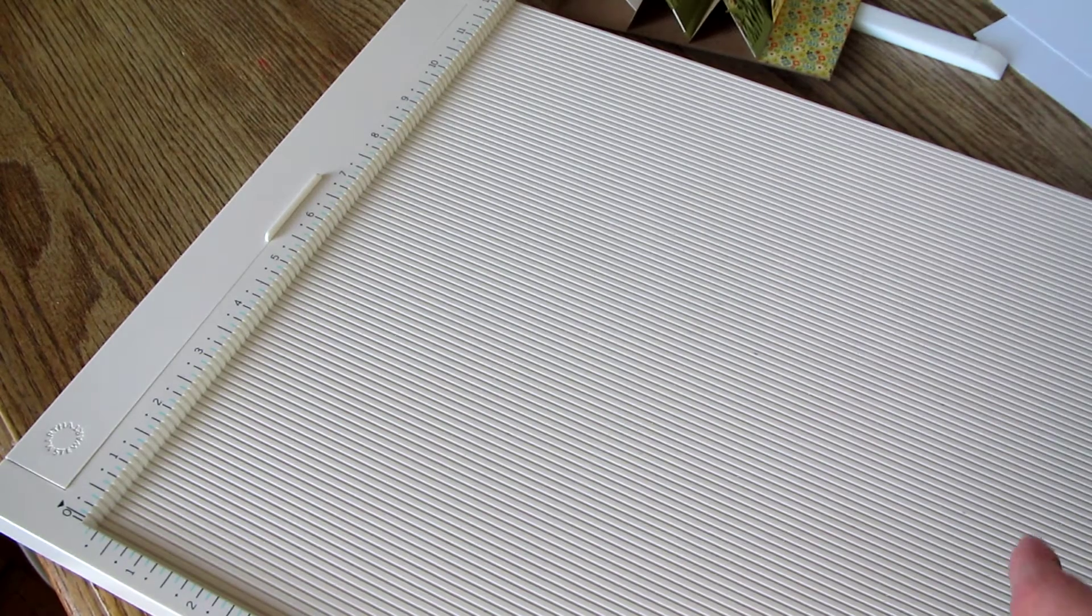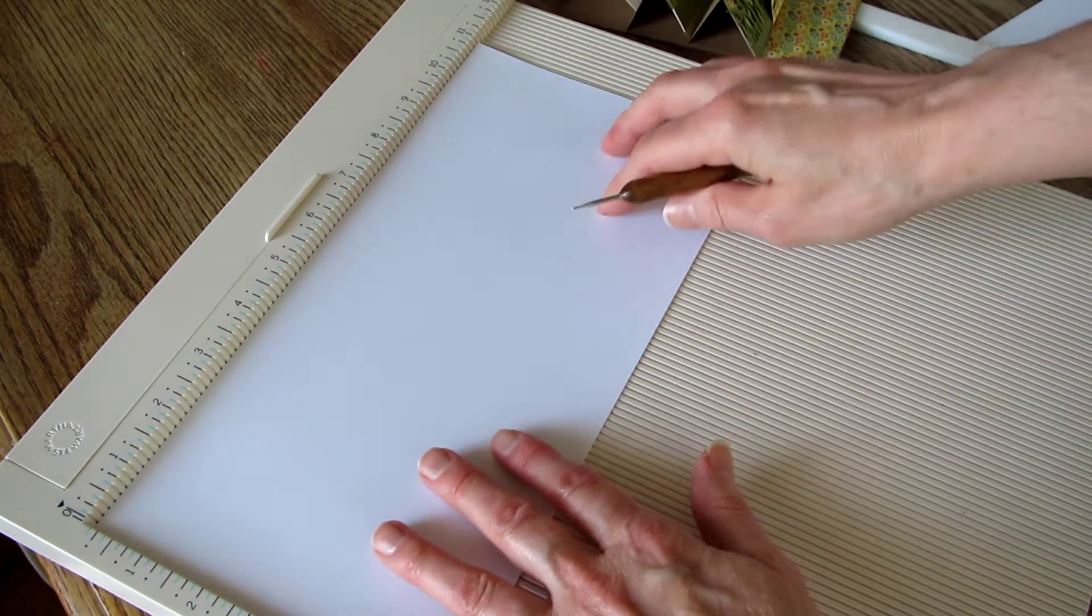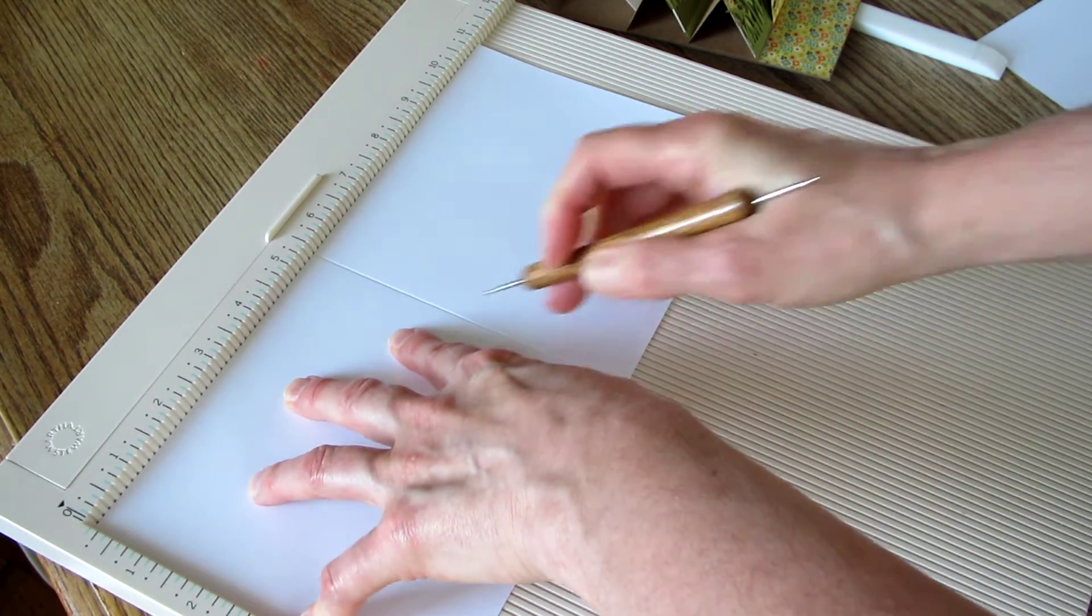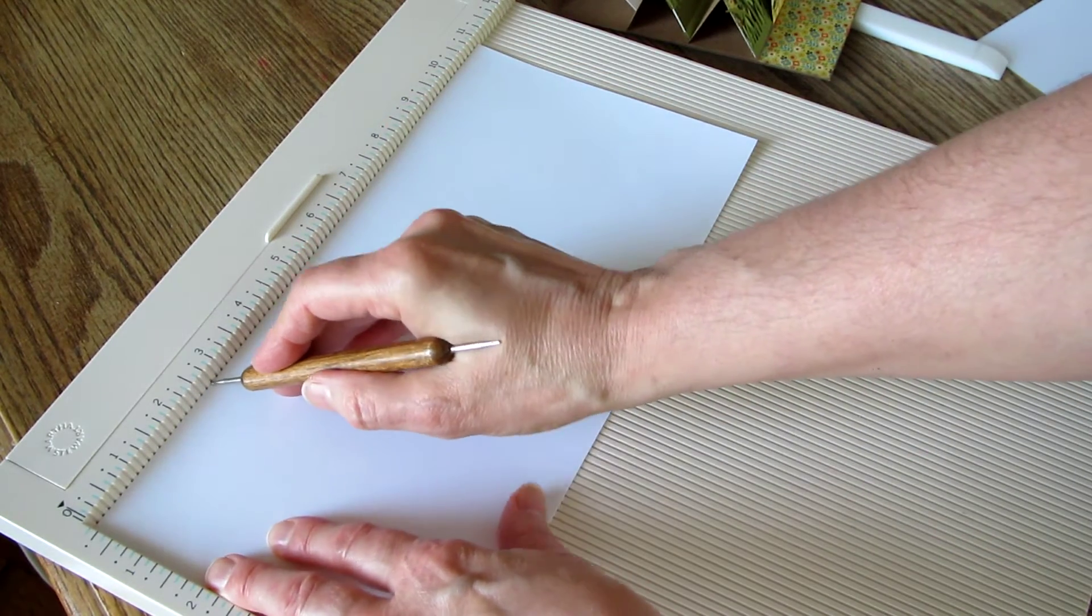I'm starting with a five and a half by eleven piece of cardstock and scoring at five and a half and two and three quarters.